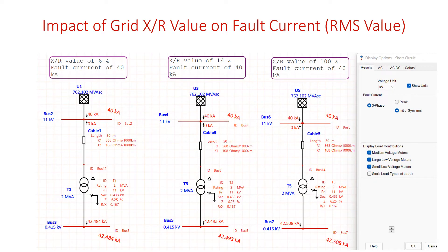In order to understand the impact of grid X by R value on fault current, I have chosen one simple ETAP model where the grid is with X by R value of 6, fault current of 40 kilo amps. I have provided one cable that connects transformer, cable with the length of 50 meter, R1 X1 value displayed here. The transformer is a 2 MVA transformer, primary with 11 kV, secondary with 0.433 kV. Impedance of the transformer is 6.25 percentage and R by X value is 0.167.